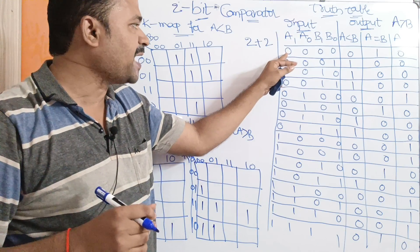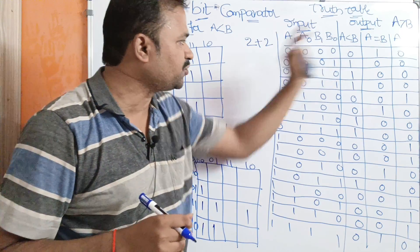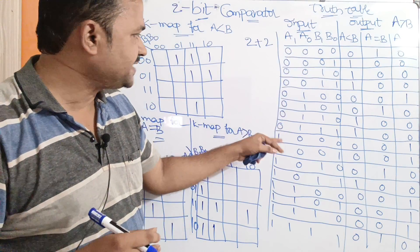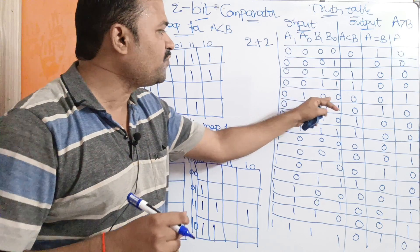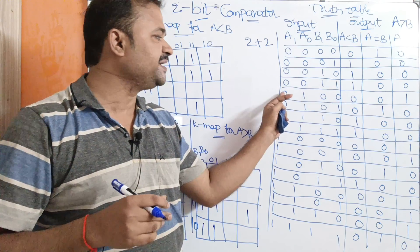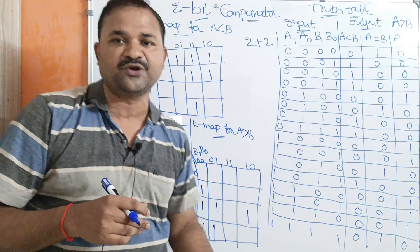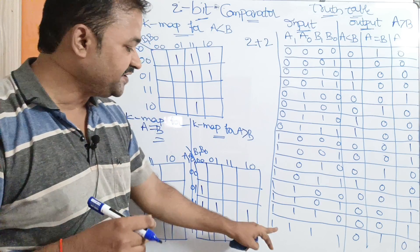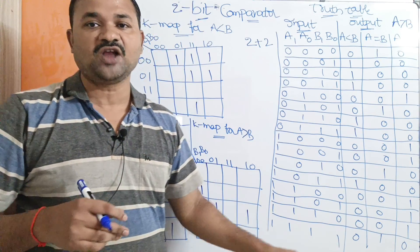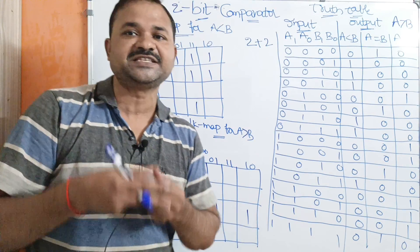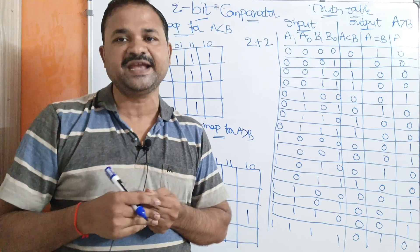The binary notation of decimal number 0 is all zeros. If you take the combination 0,1,0,1, that represents decimal number 1 in binary notation. And the last notation, all ones, represents decimal number 15 in binary.